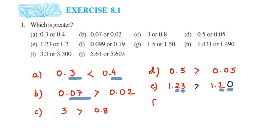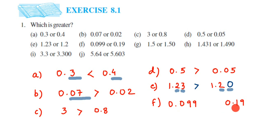The next question: 0.099 and 0.19. The whole parts are both zero. The tenth place: here we have 0 and here we have 1. One is greater, which means 0.19 is greater than 0.099.